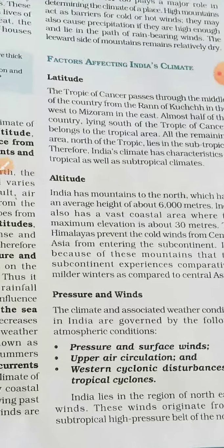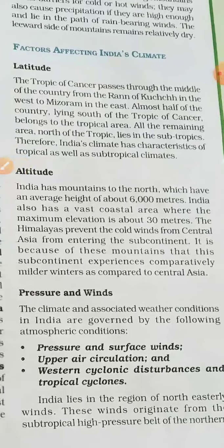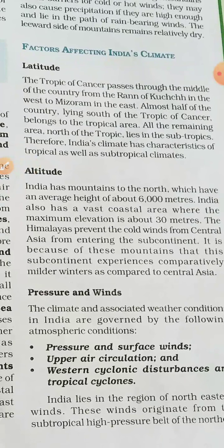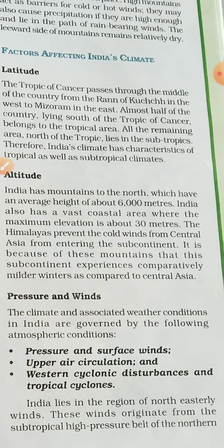Latitude is similar to the equator. Altitude is height above sea level. India has mountains to the north which have an average height of about 6000 meters. India also has a vast coastal area where the maximum elevation is about 30 meters. The Himalayas prevent the cold winds from Central Asia from entering the subcontinent.